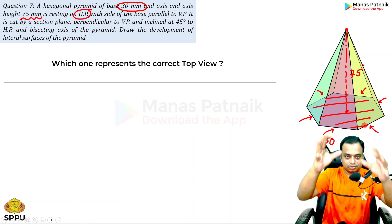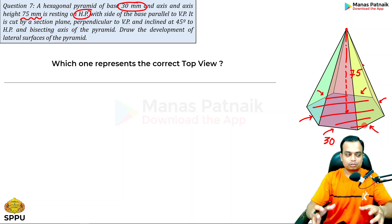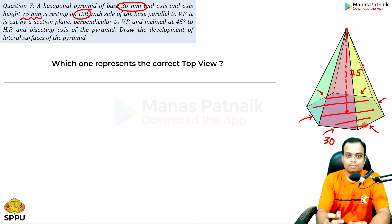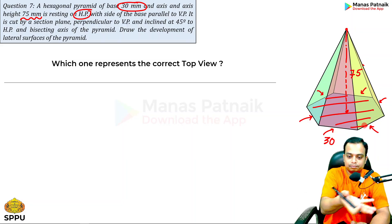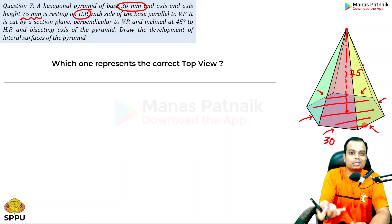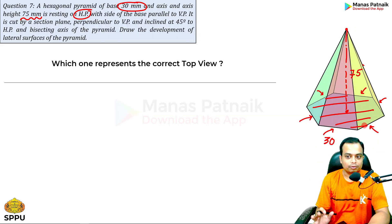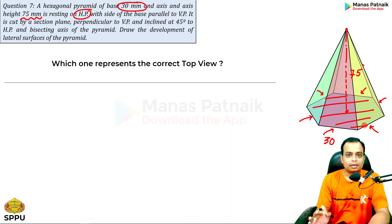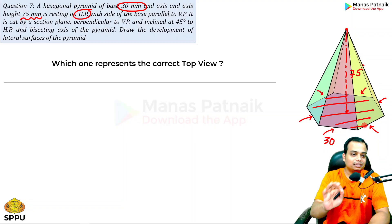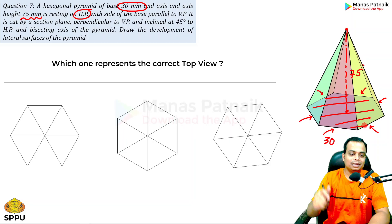Since the pyramid is resting with its base on HP, the true shape of the base is visible from the top, so you begin with the top view. In the top view you will see the hexagon. I'll show you three different top views — please select the correct option with proper justification.